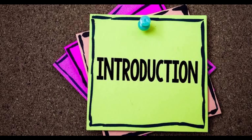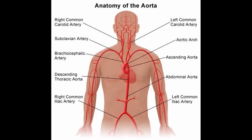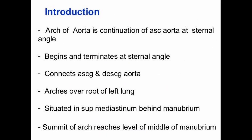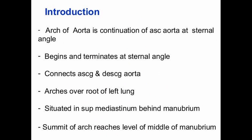Firstly, we discuss the introduction of the arch of aorta. The arch of aorta is a continuation of the ascending aorta at the sternal angle. It connects the ascending and descending aorta. As you can see on the diagram, the arch is over the root of the left lung, situated in the superior mediastinum behind the manubrium. The summit of the arch reaches the level of the middle of the manubrium.